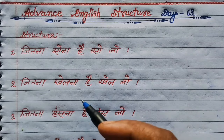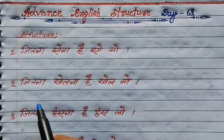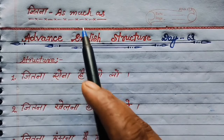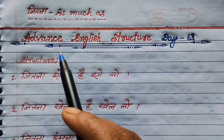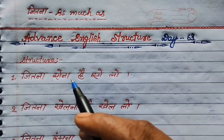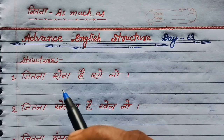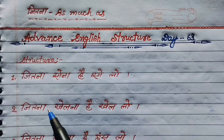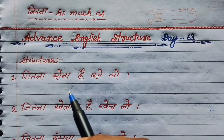Guys, अभी just आपने इन सारे sentences को सुने हैं, तो एक चीज़ आपने जरूर notice किये होंगे — जितना, जितना, जितना। क्या है सारे sentences में common है? तो जितना के लिए हम use करेंगे as much as, मतलब जितना। तो चलिए guys, इस phrase को structure में रखके देखते हैं, क्योंकि main तो होता है structure। जब तक यह structure समझ में नहीं आएगा, तब तक sentence को बना नहीं पाएंगे।